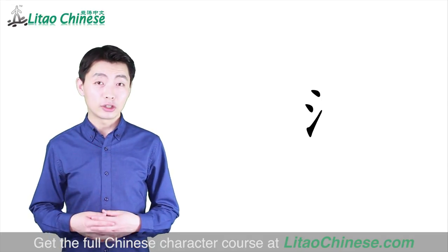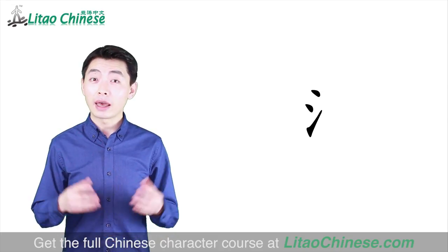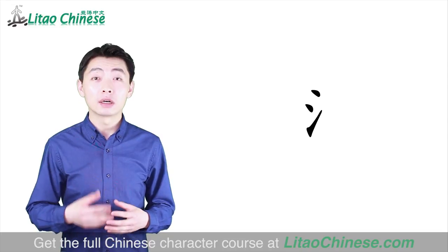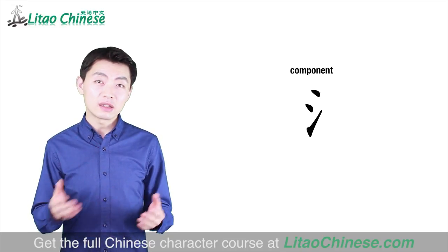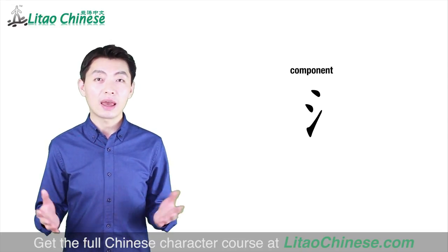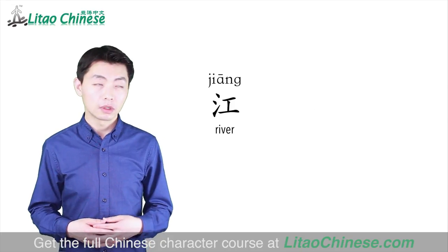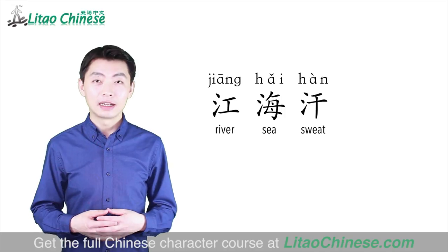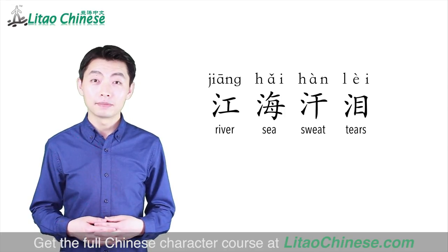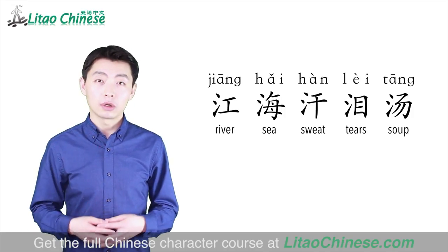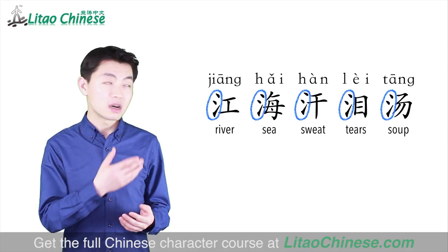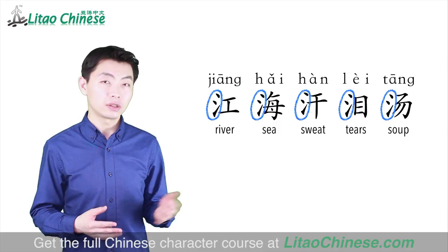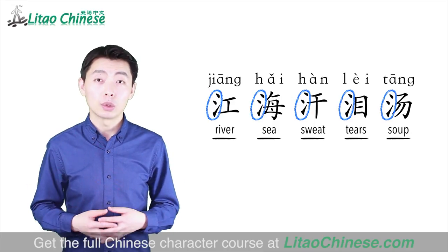This is not a character. It can only be one part of characters — it's a component. You can see this component in many characters. For example, the five characters all have this component on the left side, and we can find that their meanings are all related to water.